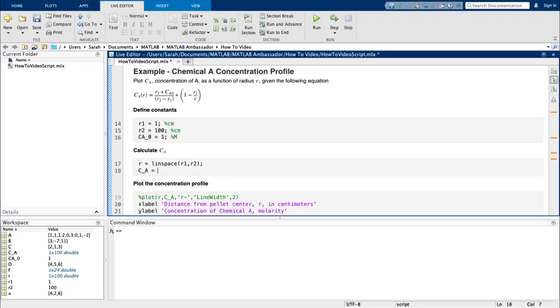First, I use the linspace to generate my length vector r. Now, to calculate cA in MATLAB, pay careful attention to my use of the dot operator. My variables r2, cA0, and r1 are all scalar, so no dot operator is necessary. However, I need to use a dot operator when I am dividing r1 by the length vector r, since this is a scenario where both array and matrix operations are possible.